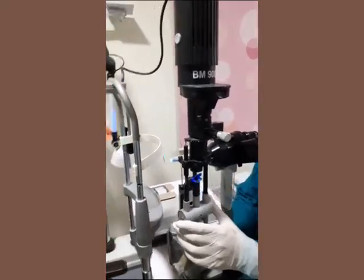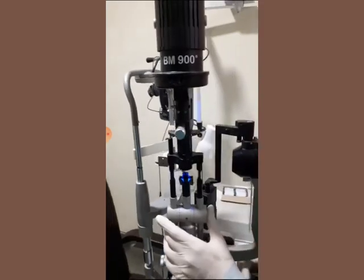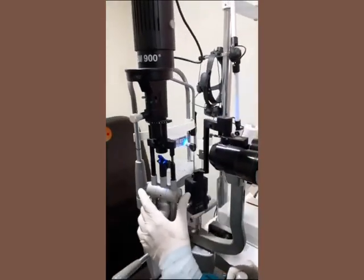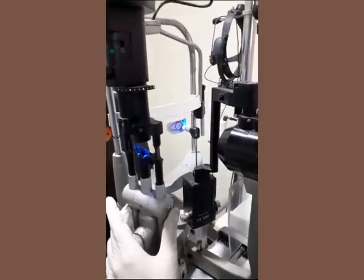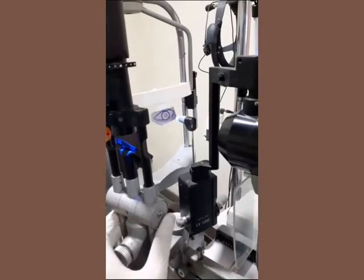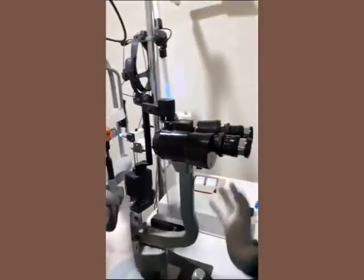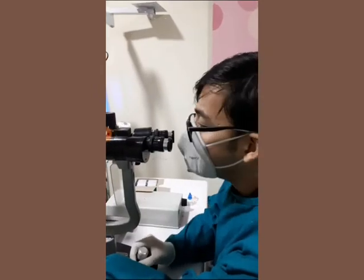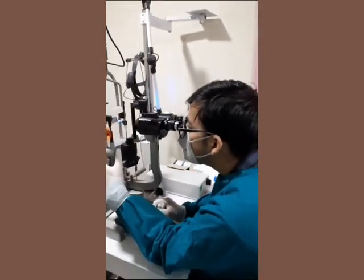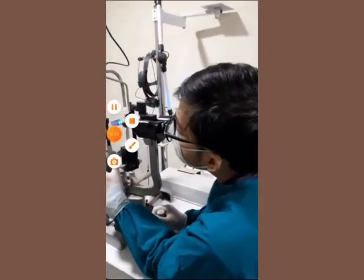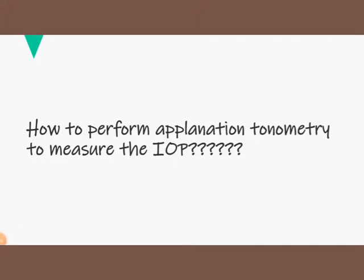After staining, move the applanation tonometer in front of the patient's eye and look through the biomicroscope to confirm the biprism is visible. Make some adjustments, then switch on the slit lamp and turn on the cobalt blue filter. In the cobalt blue filter, the fluorescein dye will appear greenish in color. After that, position the probe in front of the center of the patient's pupil, then move the slit lamp slowly toward the patient's eye until the probe and patient distance is about 3 to 5 mm.